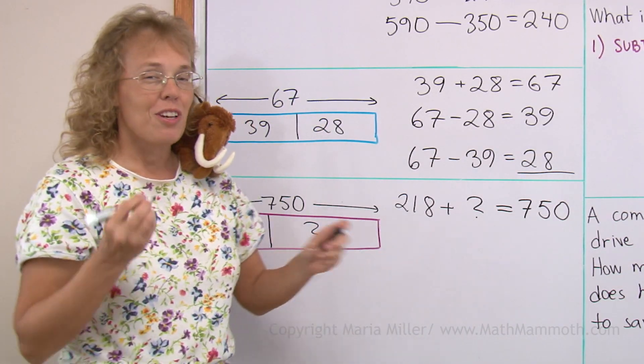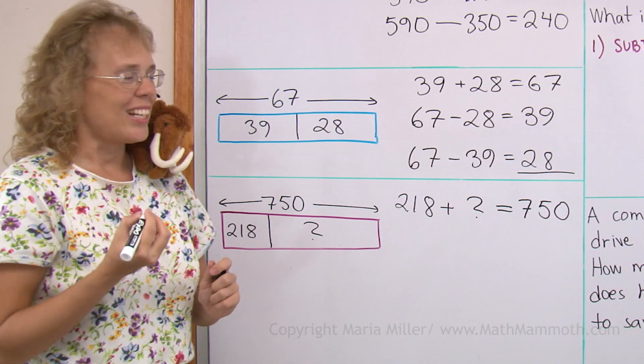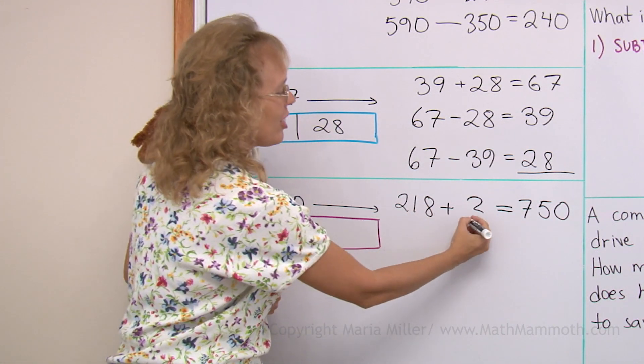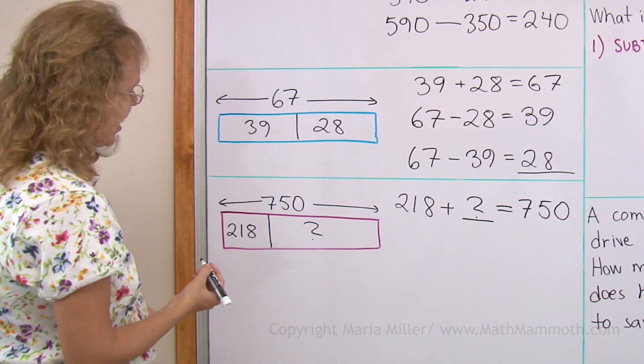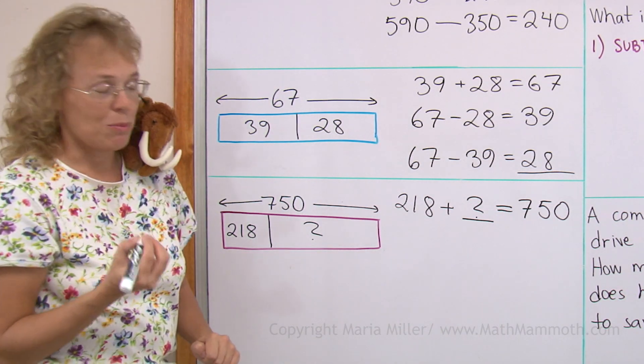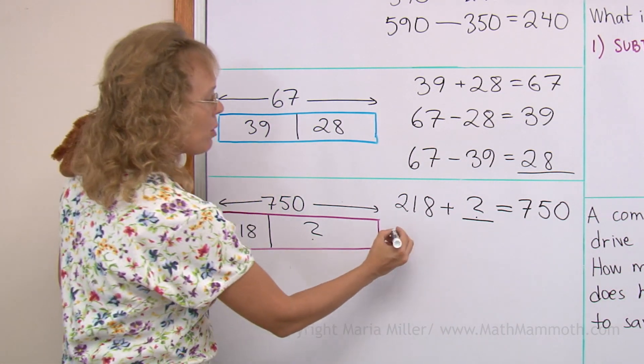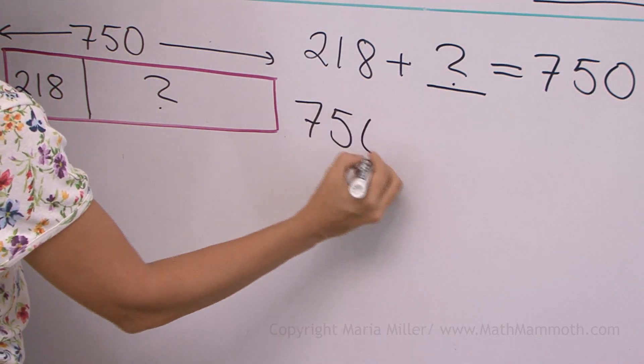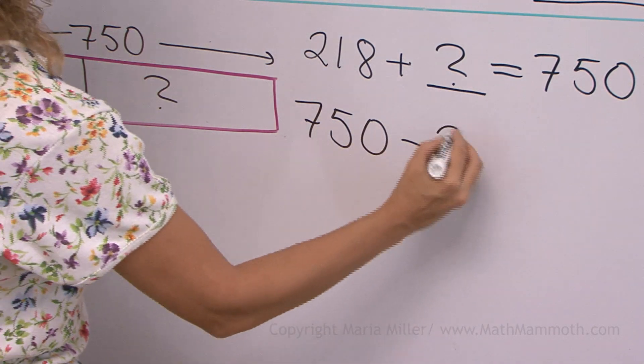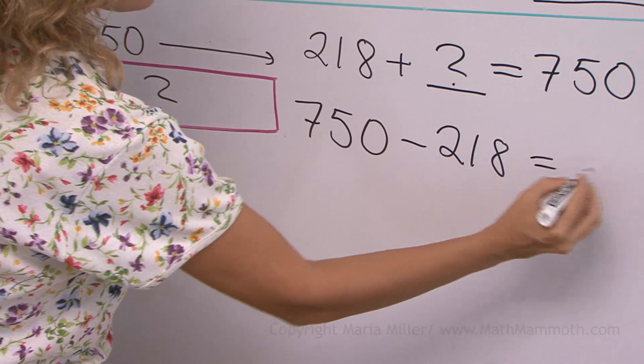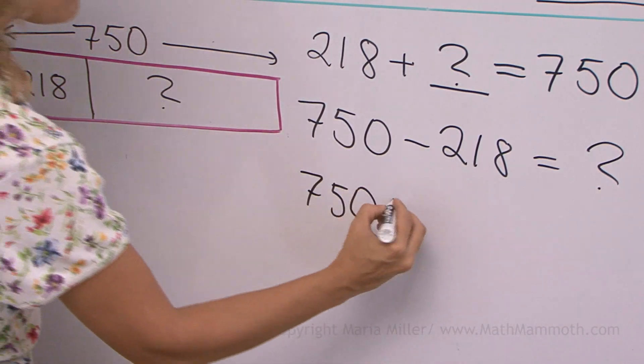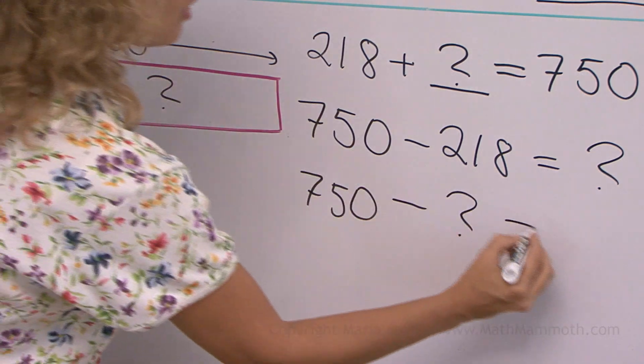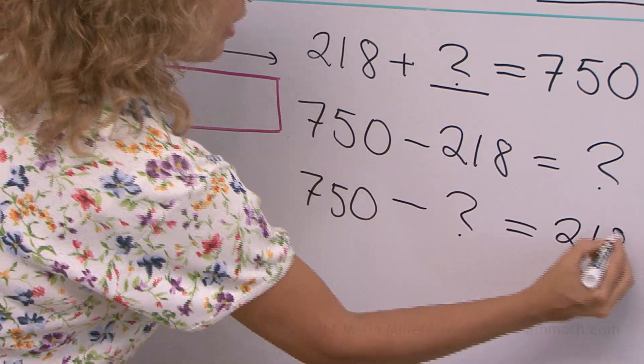This should also remind you of the how many more additions that we have studied. It is a how many more addition, or an addition with an unknown. And then I can write subtractions, and they start with the total. From 750 I can subtract 218 and I would get the unknown, or from 750 I can subtract the unknown and I would get 218.